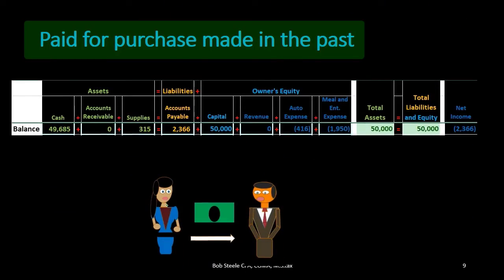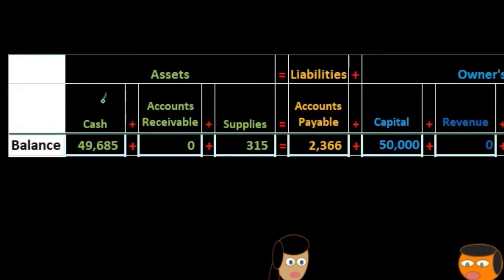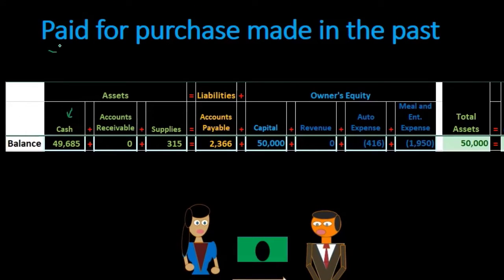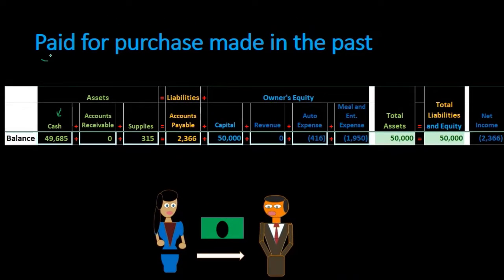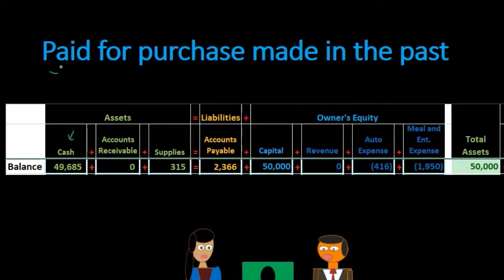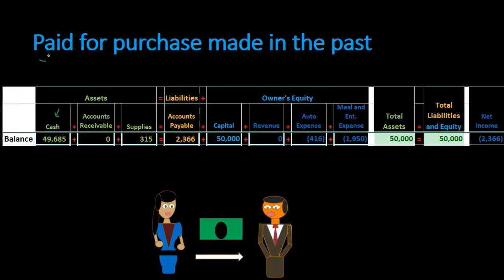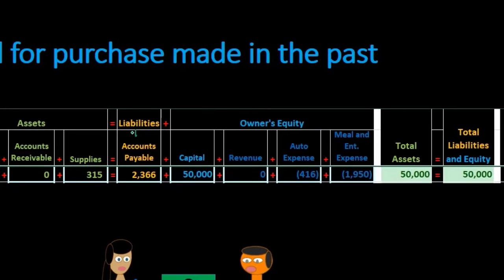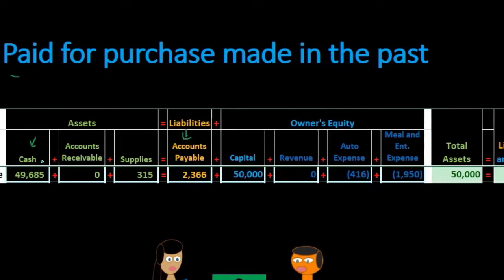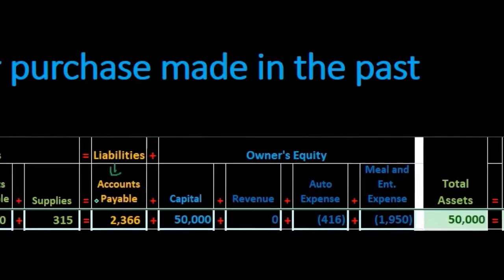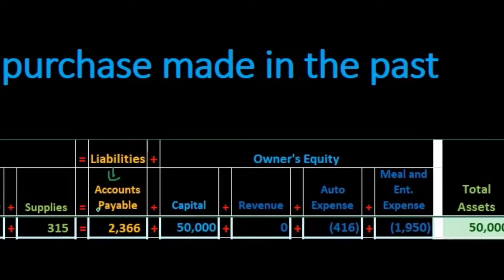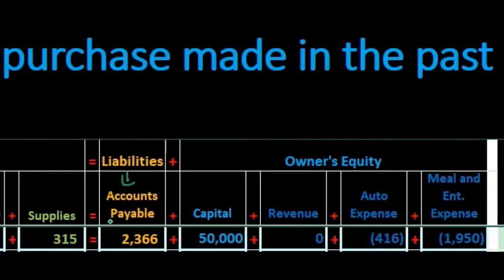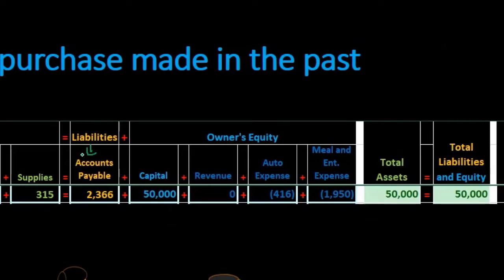Next transaction: paid for a purchase made in the past. Is cash affected? Yes — key term 'paid.' Anytime we see 'paid,' we decrease cash. The other side: we bought something in the past, often described as 'on account,' which means accounts payable. We are paying off the liability, so accounts payable must go down for at least two reasons: if the left side of the equal sign is decreasing, the other account on the right side must also decrease to maintain balance.